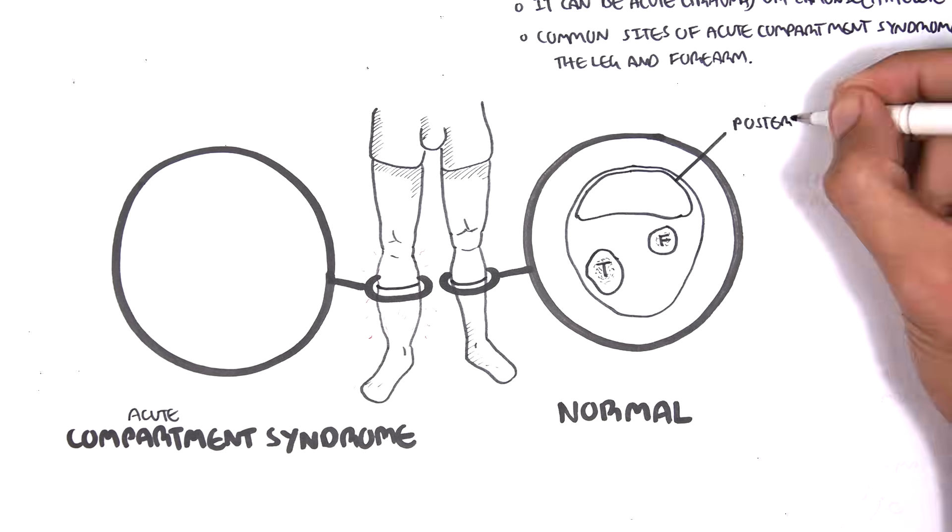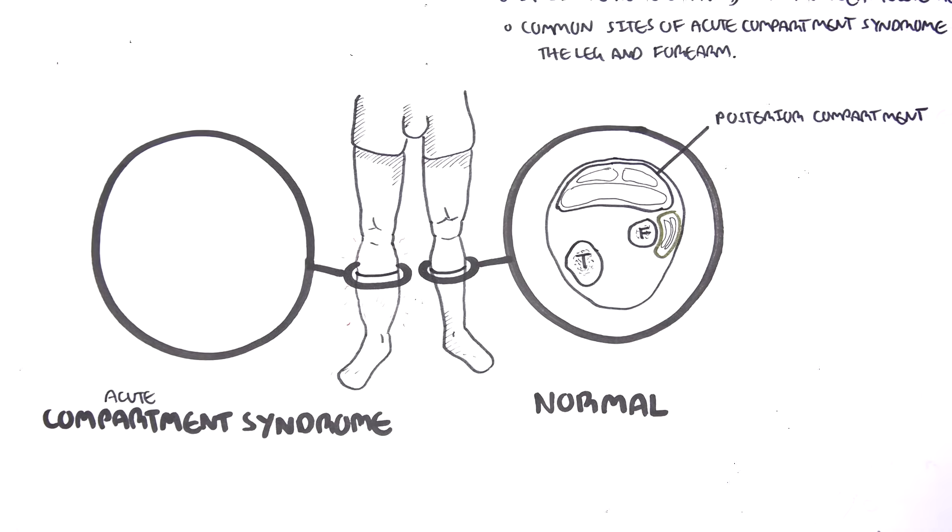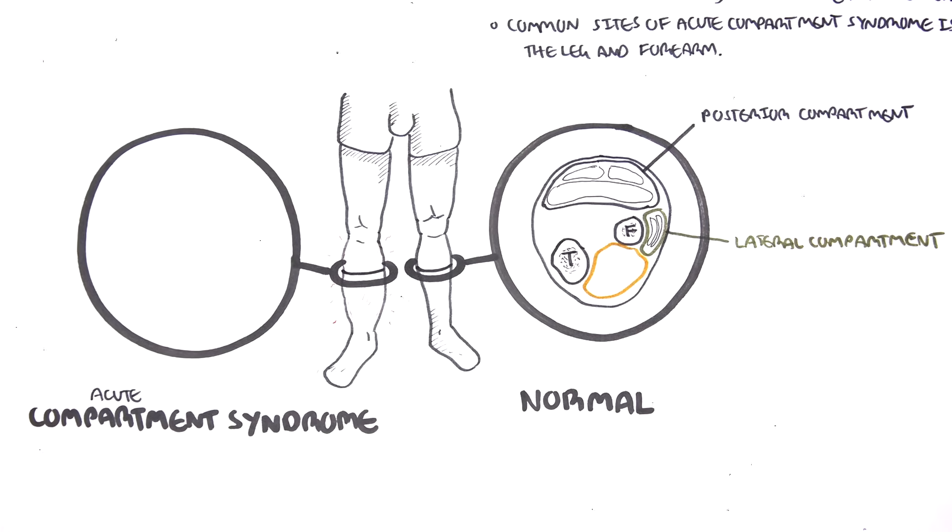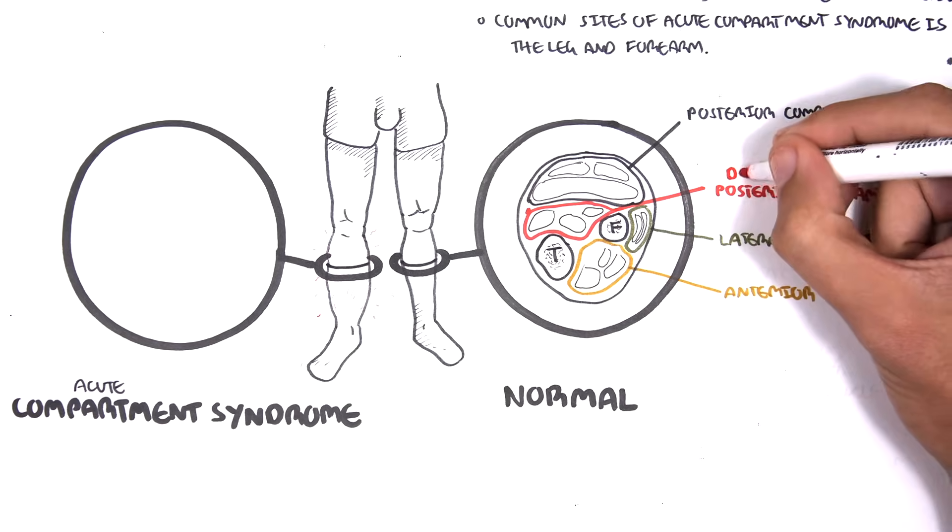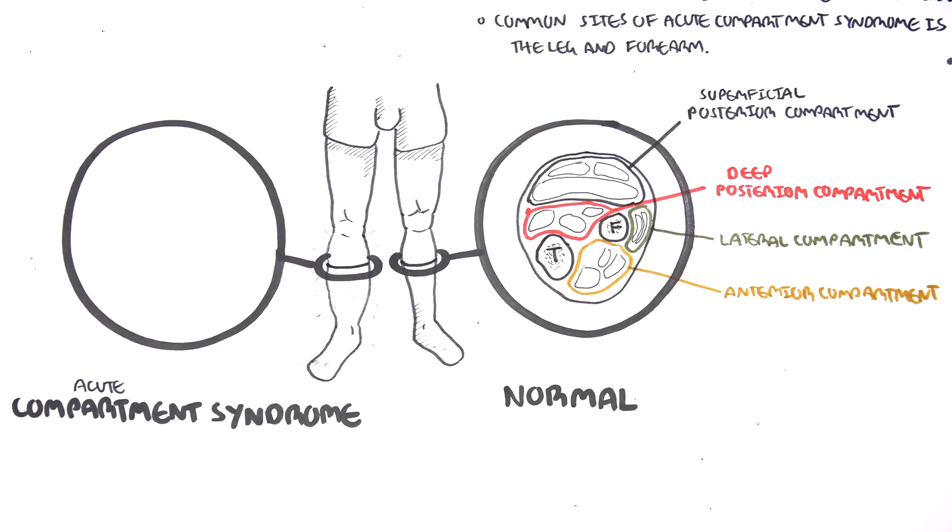The leg compartments include the posterior compartment, the lateral compartment, the anterior compartment, and another posterior compartment. This one is the deep posterior compartment, whereas the previous one was the superficial posterior compartment, which includes the soleus and the gastroc muscles.